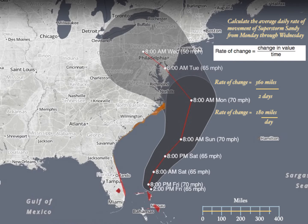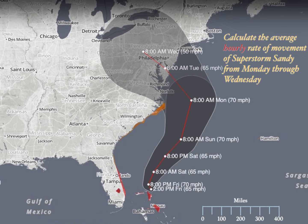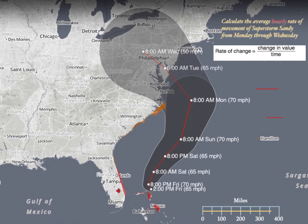When you do a rate of change, you're always going to end up with a value per one unit of time — one day, one year, one hour, and so on. If the problem asks for the hourly rate of movement of Super Storm Sandy, it's the same problem except instead of 2 days we use 48 hours, since there are 24 hours in a day. 360 divided by 48 gives us 7.5 miles per hour — that's how fast the hurricane was moving.